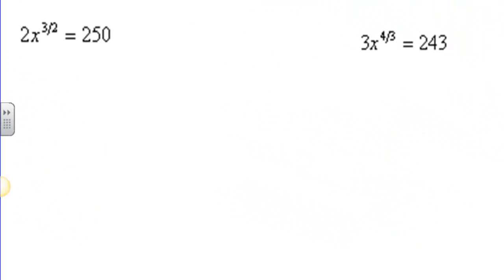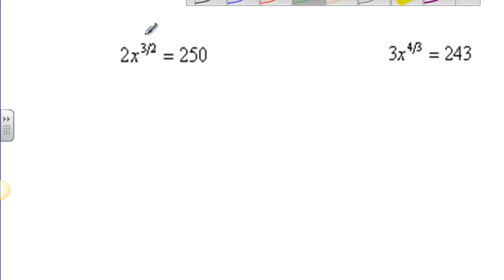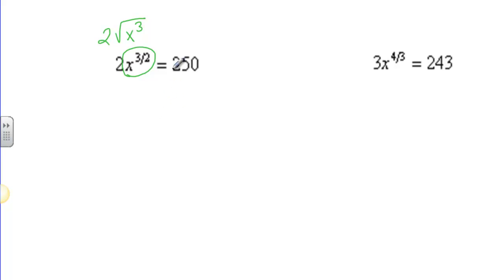Here's another problem that is a little bit different. We are doing radical problems, and if you remember, 2x to the 3 halves is really 2 times the square root of x cubed. We can do that by putting it in a radical, but my suggestion is to get the x to the 3 halves by itself first.